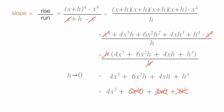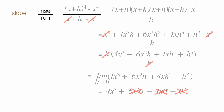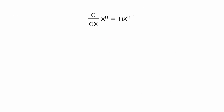So the answer is 4x cubed. Formally, I would write this as: the limit as h approaches 0 is equal to 4x cubed. Let me check my answer using the power rule. I take that 4, bring it in front, and multiply it times everything. 4 minus 1 is equal to 4 times x to the third power. And there you go.